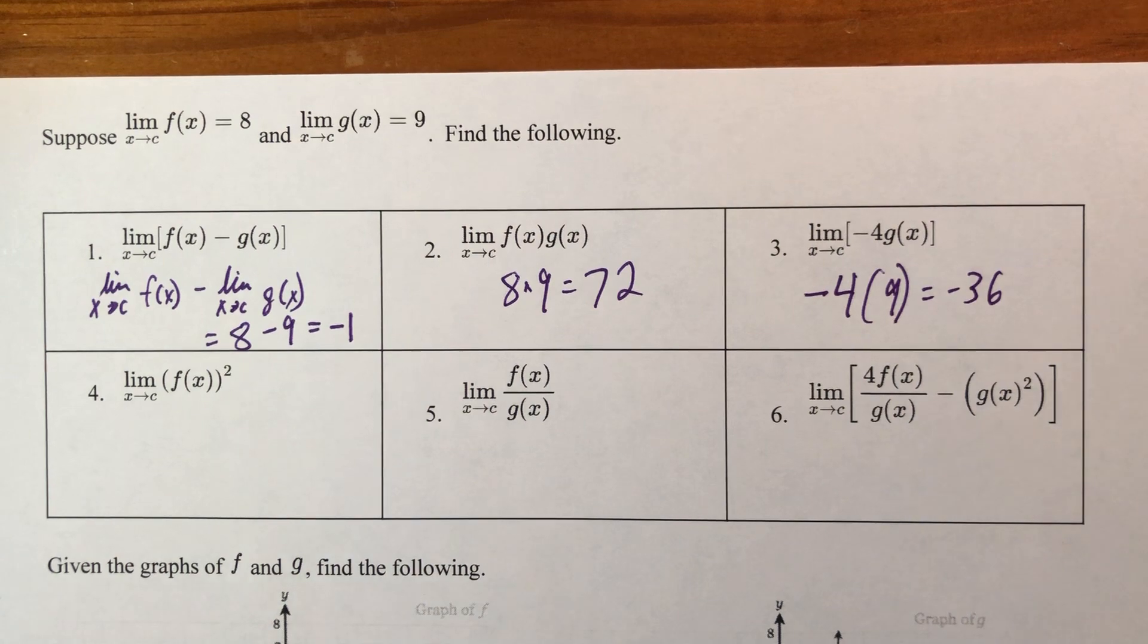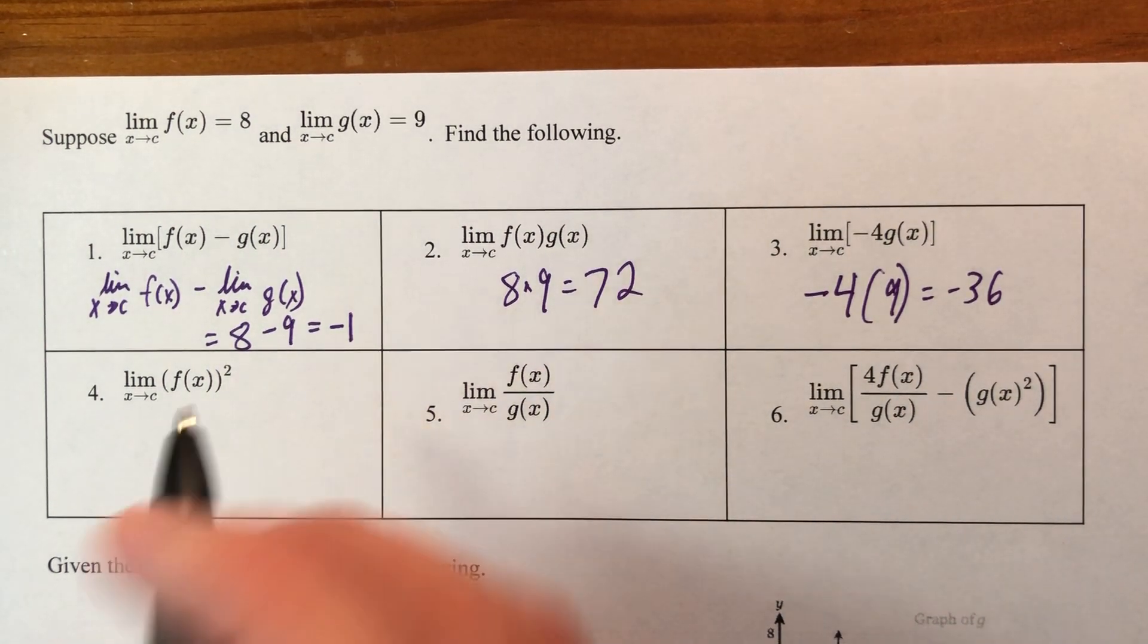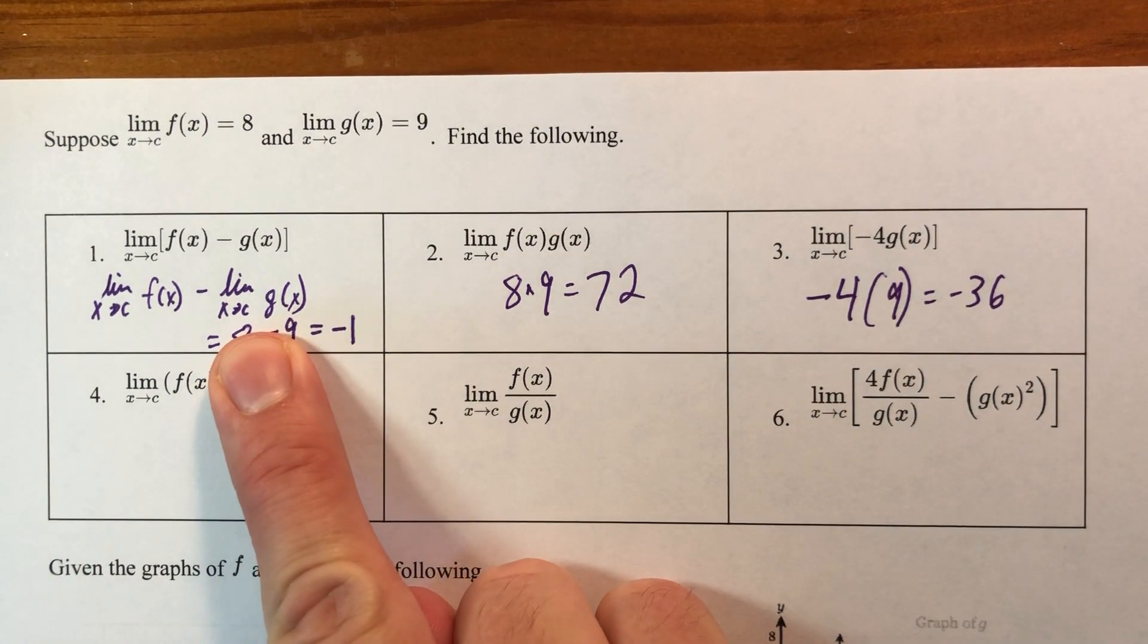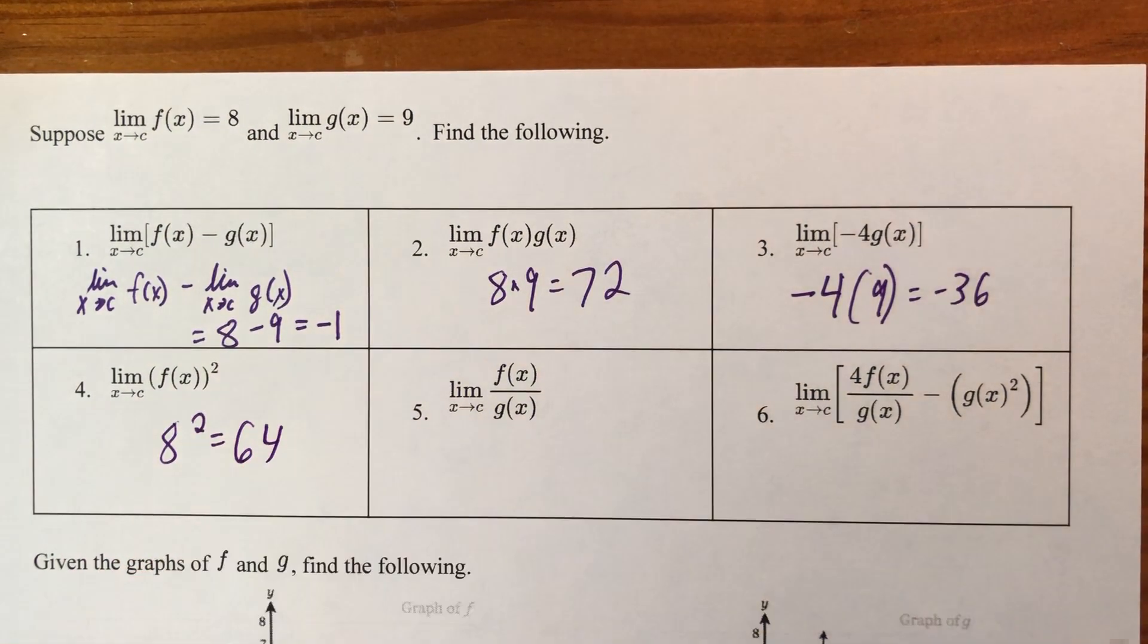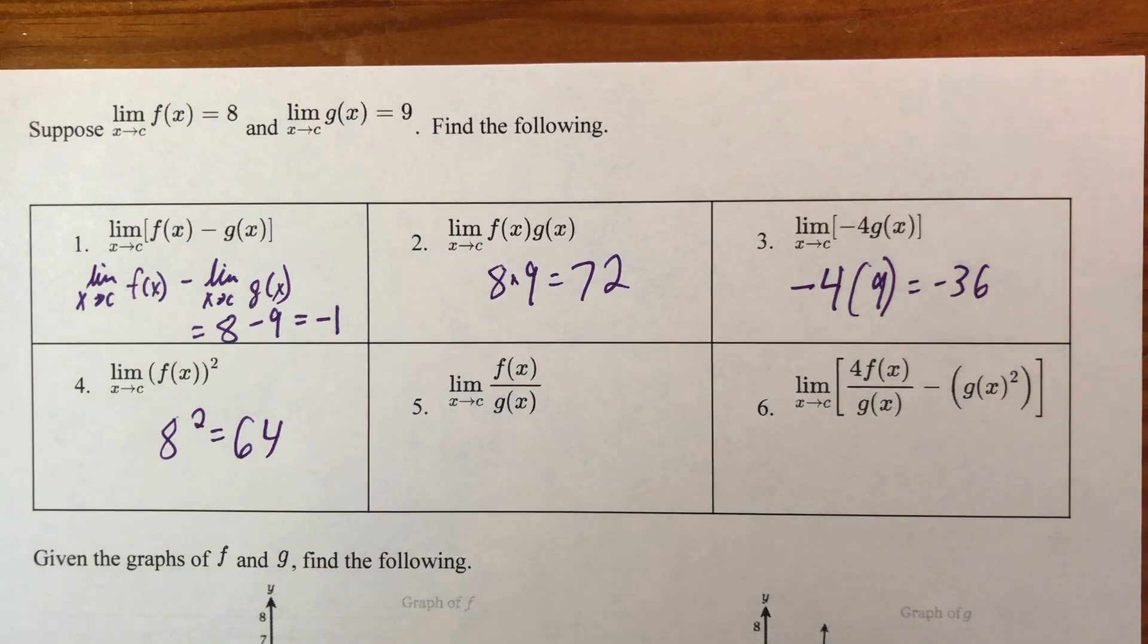Okay, this one is raised to a power. So, therefore, I'm going to just take what I would have without the power, which would be 8, and raise it to that power, and I get 64. Let's not make it harder than it is.